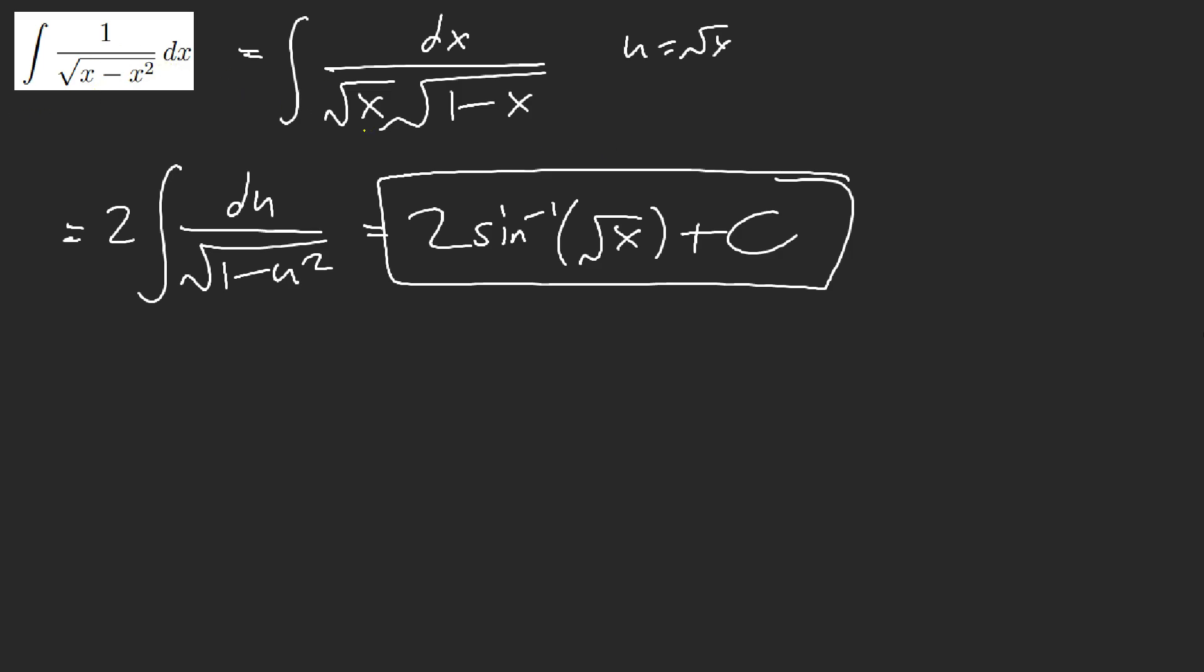Okay, the first thing is to factor. Right? We get square root of x and square root of 1 minus x. Then this should hint at you. Oh, let u equal square root of x. And the reason is because du, you should already know if you're advanced, du is equal to dx over square root of, sorry, 1 over 2 root x. Right? The derivative of square root of x is 1 over 2 root x.